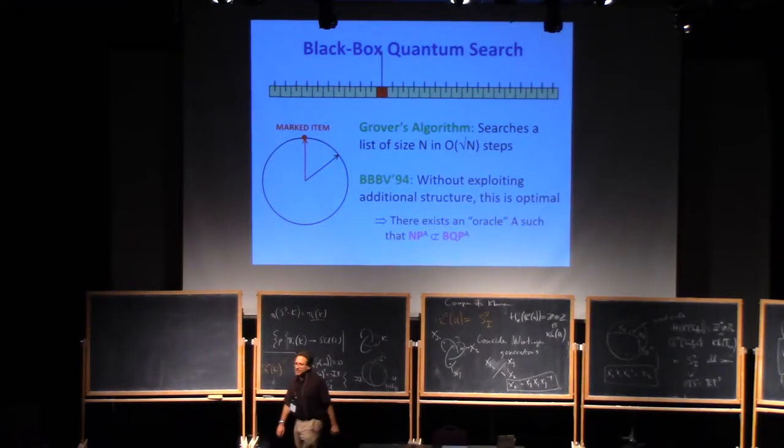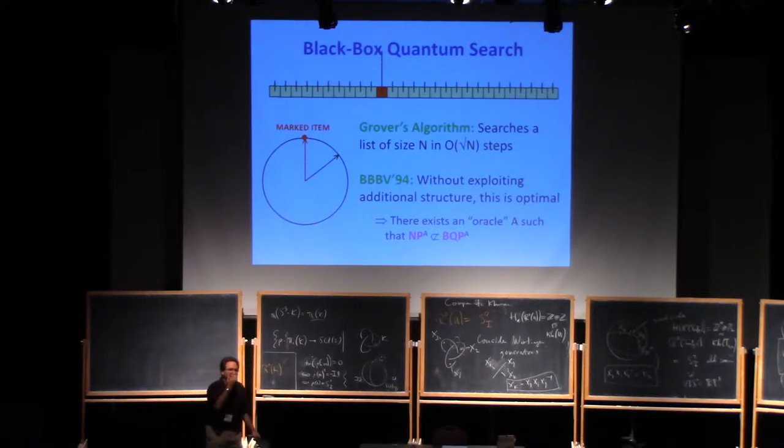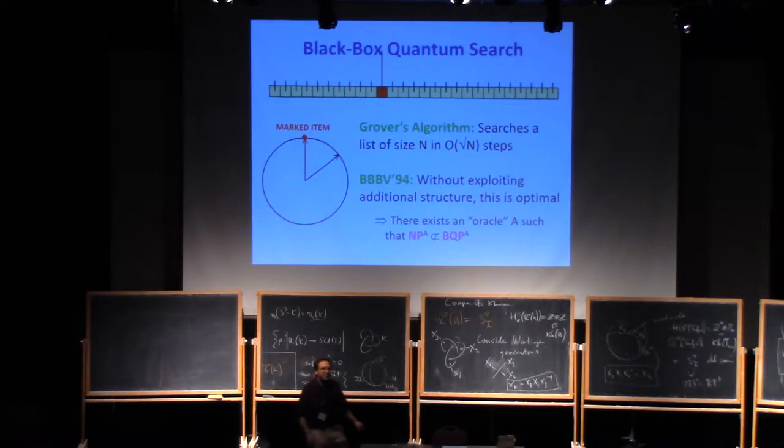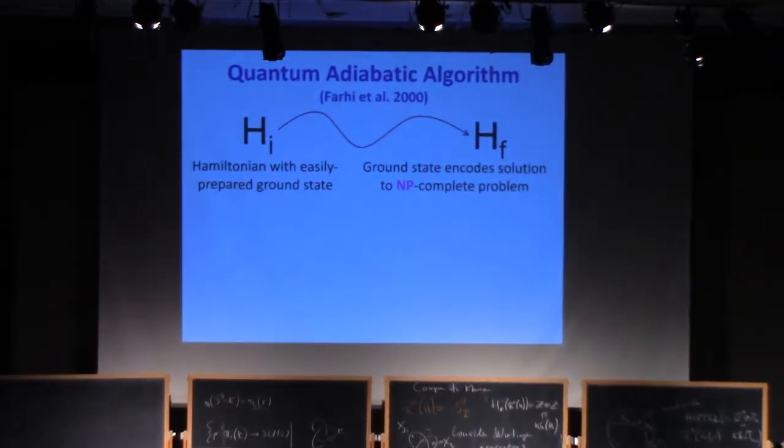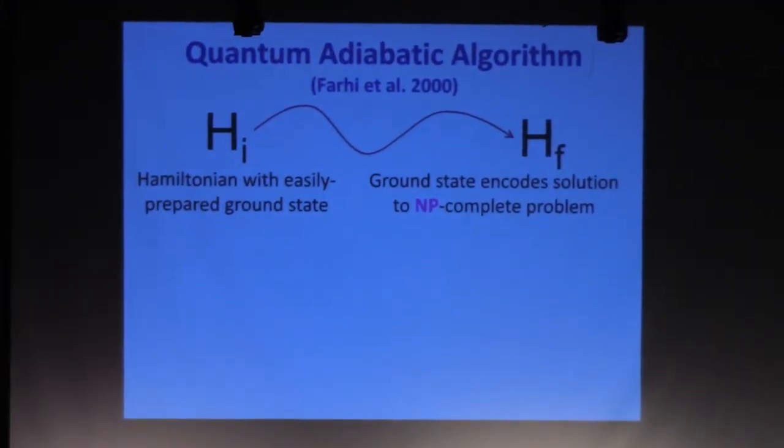But now there's also a really fundamental result due to Bennett, Bernstein, Brassard, and Vazirani, BBBV, and what they showed is that if you don't somehow exploit the structure of your NP-complete problem, then Grover's algorithm is the best that even a quantum computer can do. So even a quantum computer can only give you this square root speedup if you're only looking at your problem as a black box. This was actually proven to be optimal a few years before it was discovered to exist.